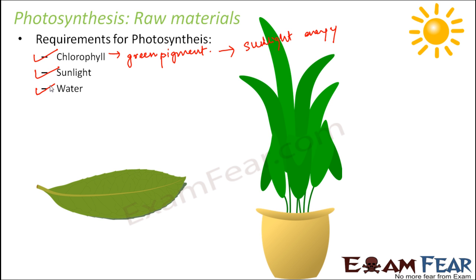The third requirement is water — water is a substance needed for photosynthesis to happen. This is the reason we keep watering plants every day. If you stop watering a plant for 3-4 days, the plants start drying up and eventually the plant would die. Plants receive water through the soil.